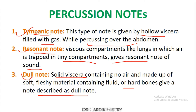Whenever you percuss over solid structures such as bones, liver, or kidney, you will find the dull note. Over the heart you will also find a dull note. On the left intercostal spaces or anywhere in the chest cavity, if you find a dull note, it may indicate the development of a solid tumor inside the abdominal cavity or lungs. In summary, the three percussion notes are tympanic, resonant, and dull.